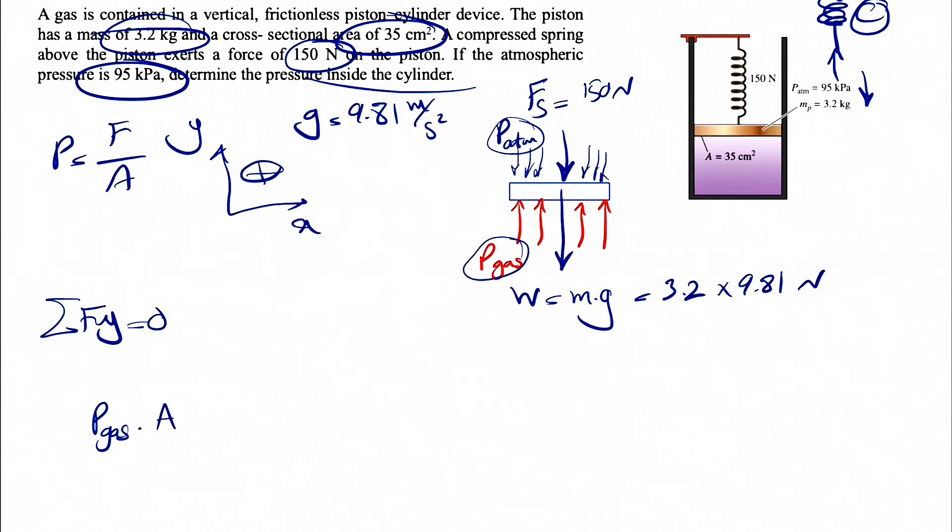So P gas times the area, which is the area that we have in the question, 35 cm². That's the only force that is upward. The rest of them are downward, minus Mg, minus the 150 or the force in the spring.